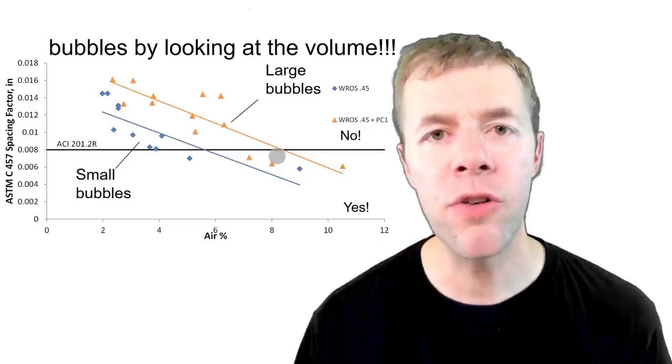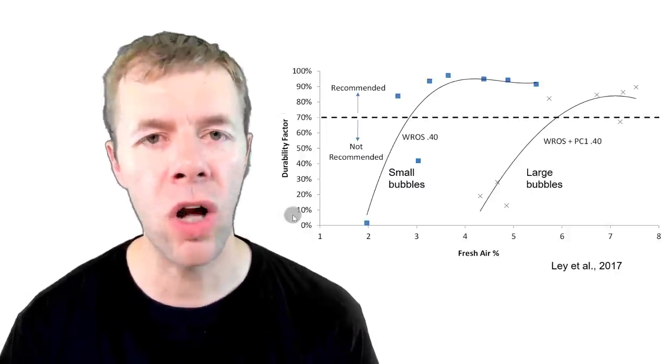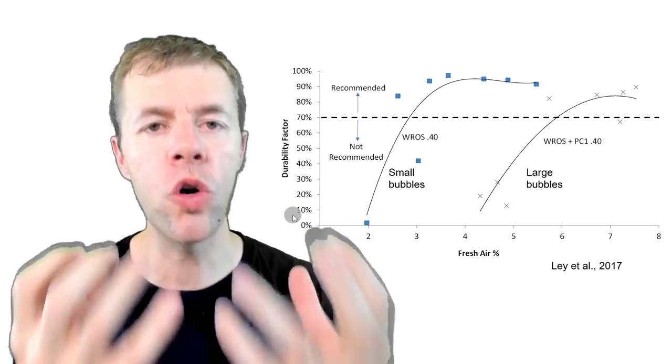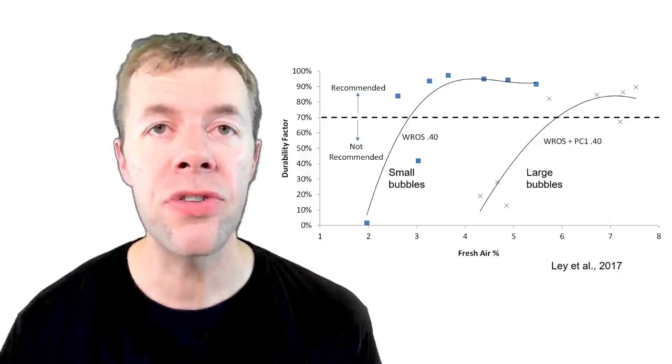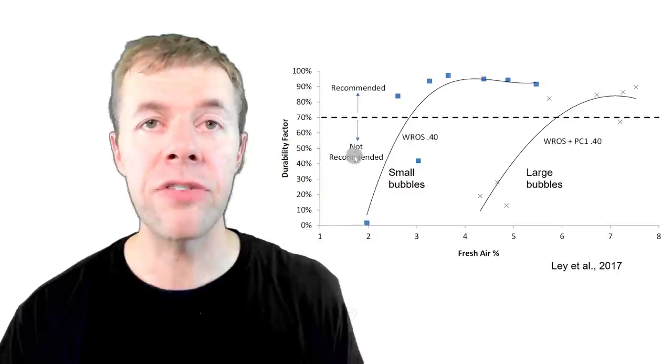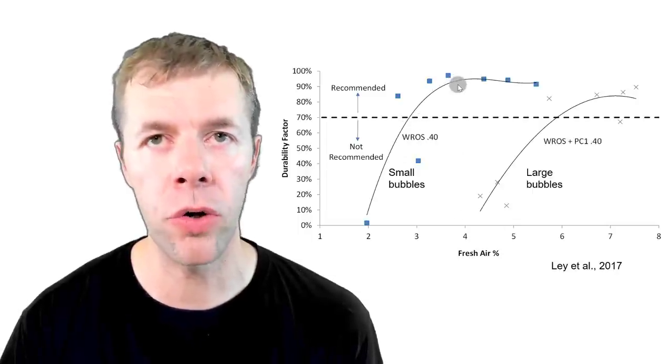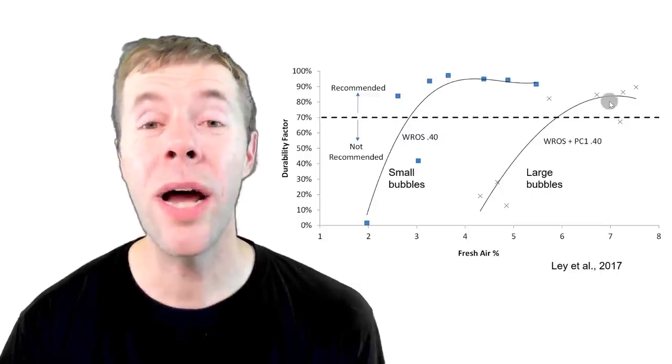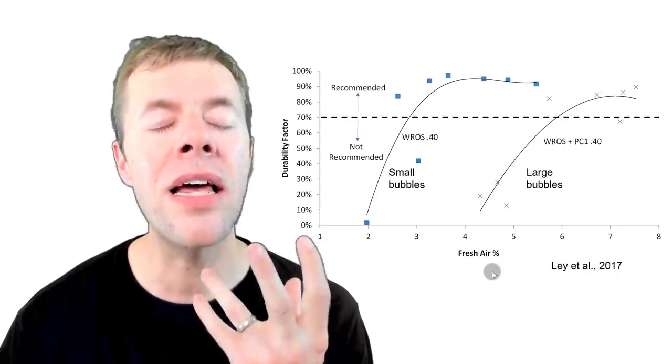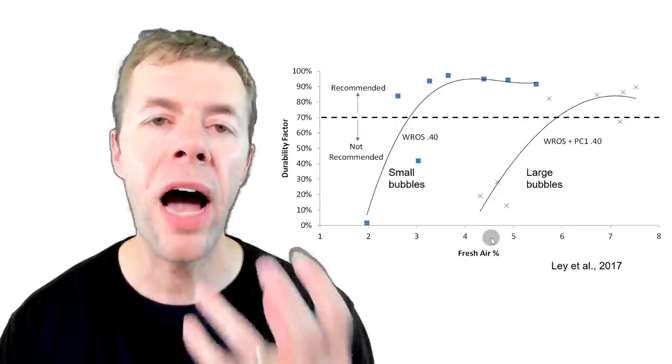You cannot tell the size of your bubbles by just looking at the volume. We're going to see this over and over again. Now here's another plot that shows air content down here versus durability factor. This is performance in the freeze thaw test. This is where we make concrete and we freeze it, we thaw it over and over and over again. We actually send a stress wave through it and we measure how much cracks form on the inside. This is the line that we call failure and everything above this line is good. Everything below the line not so good. You can see with this small bubble mixture that if I get enough air, about four percent air in my concrete, everything is great. But look at this large bubble mixture. I need a lot more, about seven percent air. That's quite a bit different. The big takeaway here is that air content alone, air volume alone is not the way to determine if you're going to have freeze thaw durable concrete. You have to know about the size of the bubbles.